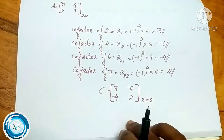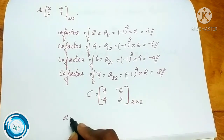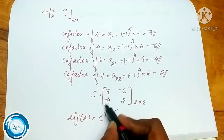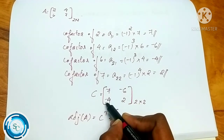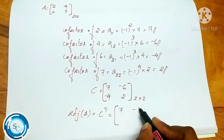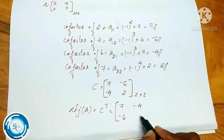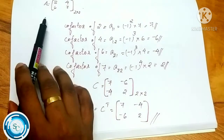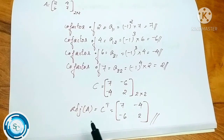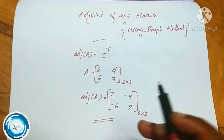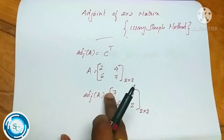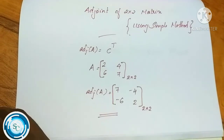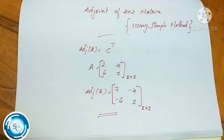The adjoint of A is equal to the transpose of the cofactor matrix. Taking the transpose, the first row becomes the first column: 7, minus 4; and the second row becomes the second column: minus 6, 2. So the adjoint is 7, minus 4, minus 6, 2. This is the simple symbol method. In the next video, we will cover the inverse of the matrix. Thank you.